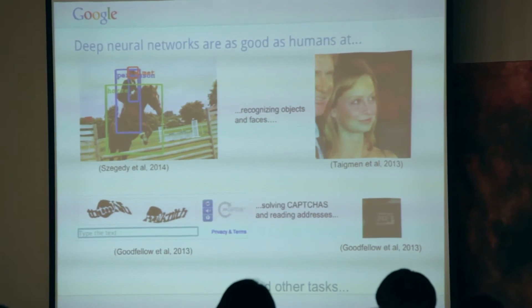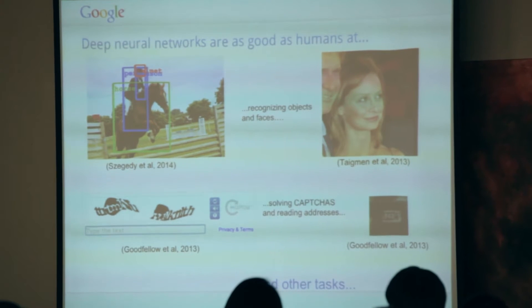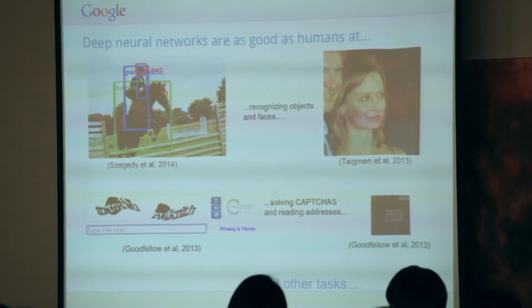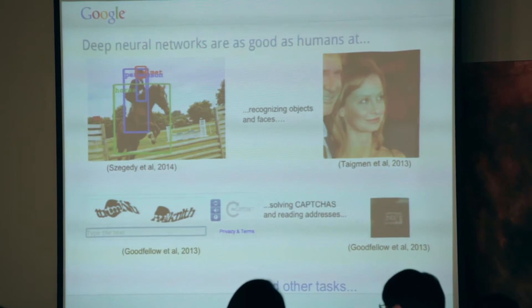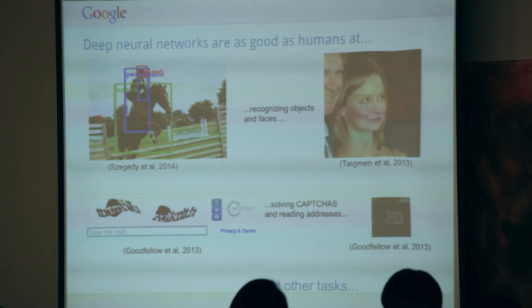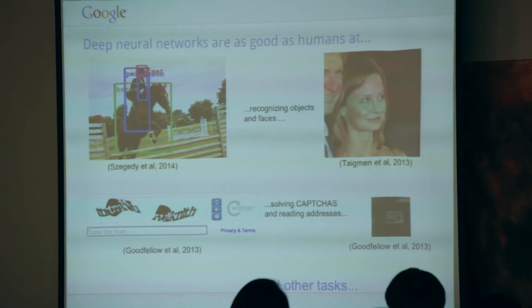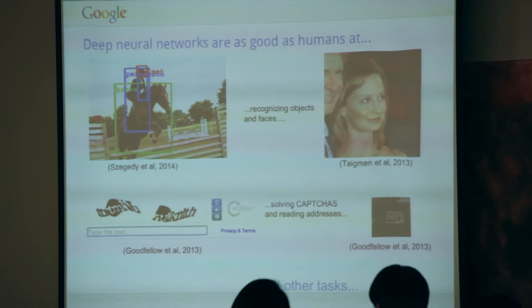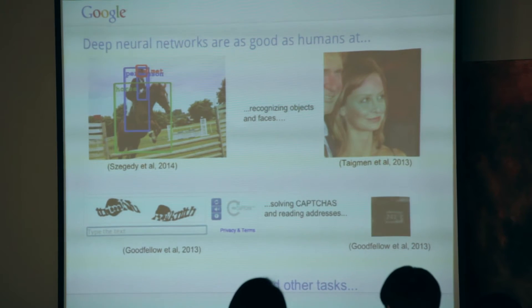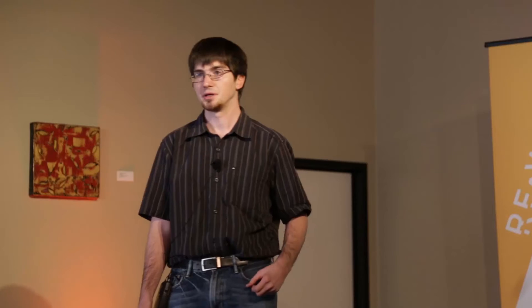Adversarial examples have become interesting recently because if you evaluate neural networks on clean, ordinary examples drawn from actual datasets, they have reached human-level performance on a variety of tasks like object recognition, face recognition, breaking captchas, and transcribing street numbers. The fact that they perform as well as people might imply they work as well as the human visual system — but we know by creating adversarial examples that they don't necessarily.